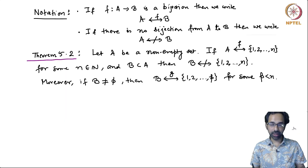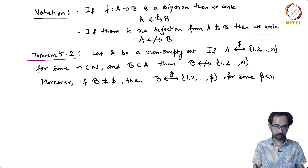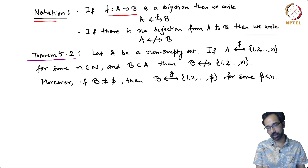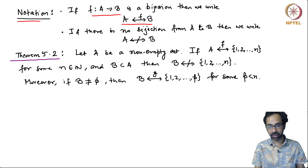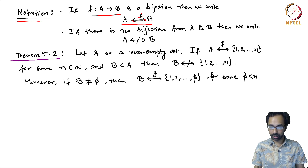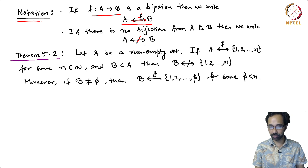Now we are ready to state the main theorem which will allow us to show that our definition of finite sets is unambiguous. For this we fix some notation. If there exists a bijection between two sets A and B, then we write A in bijective correspondence with B using a double arrow, where F is a function that implements this bijection. And if there is no bijection, we use a cut double arrow to denote that there is no bijection between A and B.